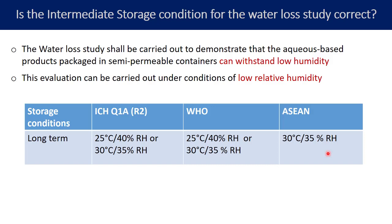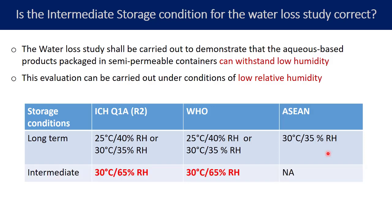Let us now talk about the intermediate storage conditions. The temperature has been maintained at 30°C — quite logical since it needs to be a little harsher than the long-term condition, so moving from 25°C to 30°C makes sense. But what I cannot understand is why ICH has mentioned 65% relative humidity for the intermediate storage condition. It should be 35% RH, or perhaps a little less, or around 40% RH — but they have mentioned 65% RH. Even WHO mentions the same intermediate condition humidity requirement of 65% RH.